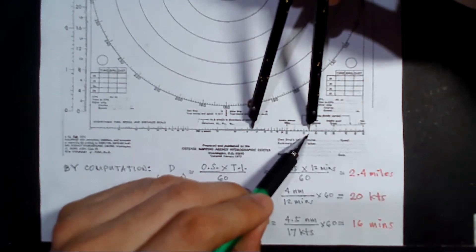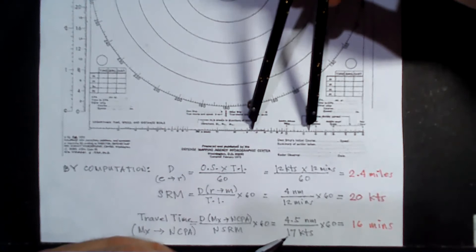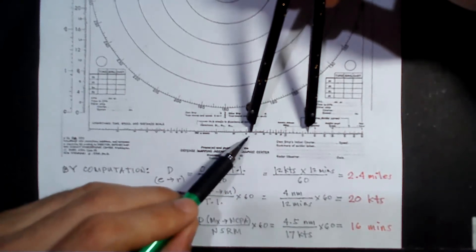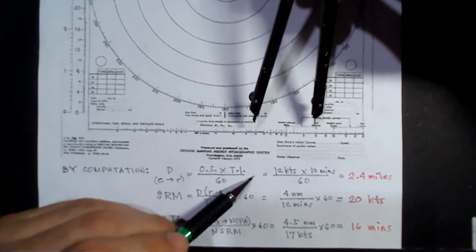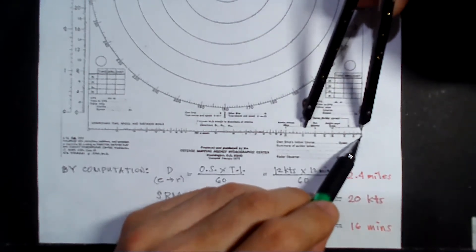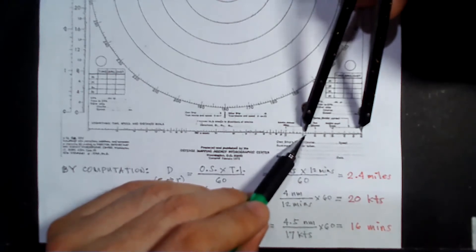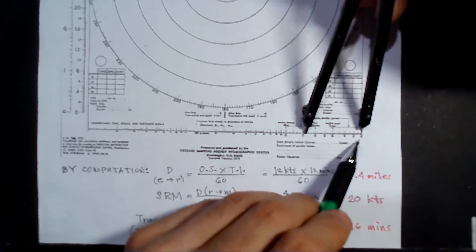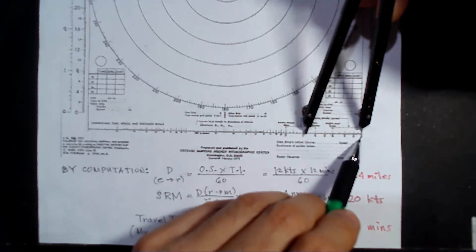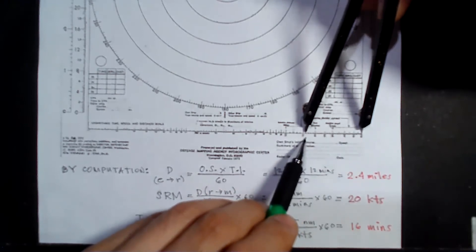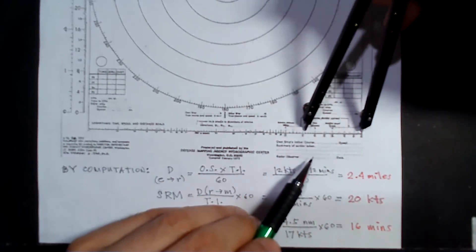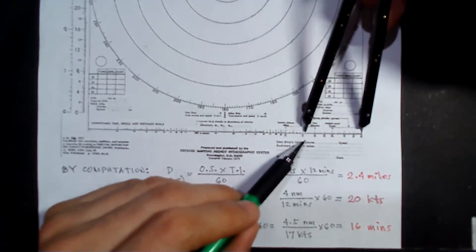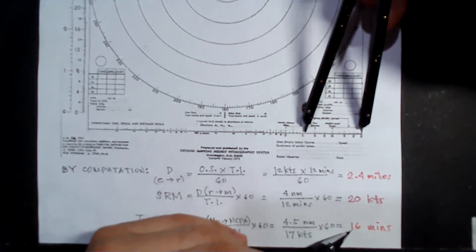The leg with the pointed end represents your speed, and the leg with the lead represents your distance. All you have to do is lift this and place it at 60. The leg with the lead will represent your time. Place the pointed leg at 60 and look at the result of the other leg. That's 16 — so 16 minutes is your answer.